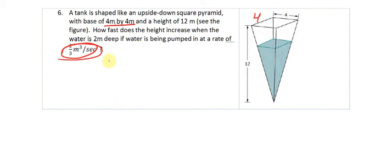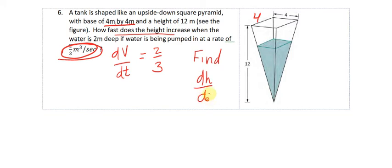So what this means is that the rate of change of the volume dV/dt is equal to 2/3. How fast does the height increase? That tells me I need to find dh/dt when the water is 2 meters deep, given some of this other information.